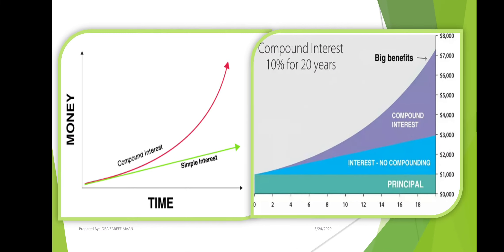Here is a graphical representation comparing compound interest and simple interest, where the x-axis represents time and the y-axis represents money. Simple interest is shown by the green line and compound interest by the red line. Clearly, the graph shows that compound interest is greater than simple interest.